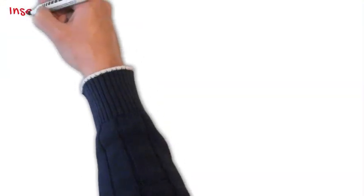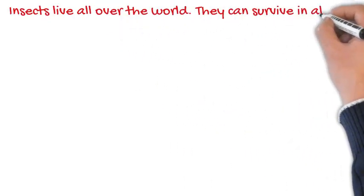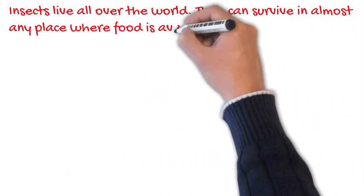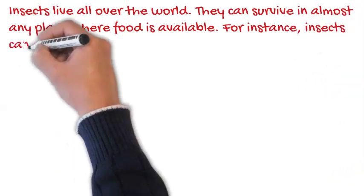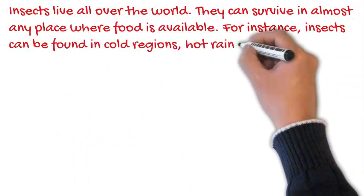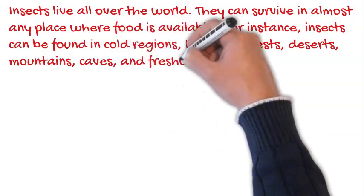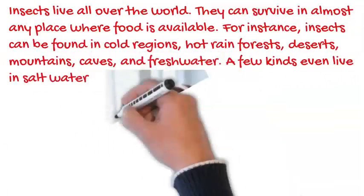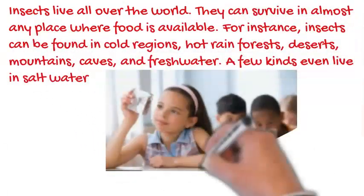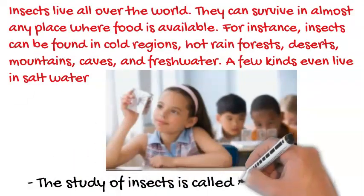Insects live all over the world. They can survive in almost any place where food is available. For instance, insects can be found in cold regions, hot rain forests, deserts, mountains, caves, and freshwater. A few kinds even live in salt water. The study of insects is called entomology.